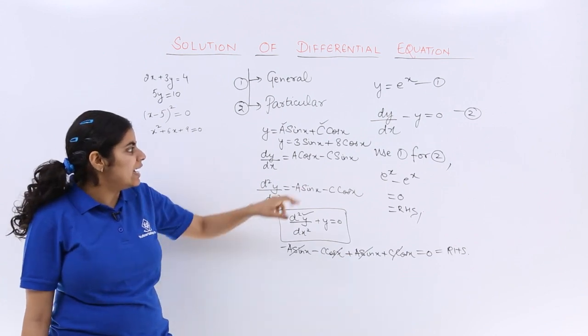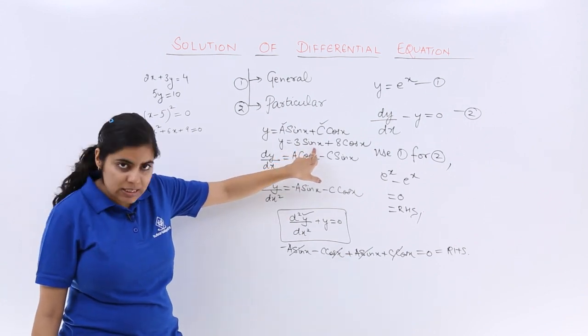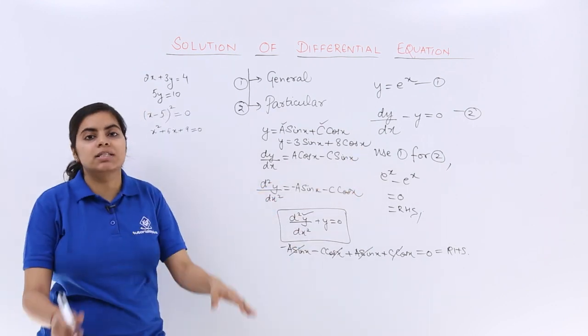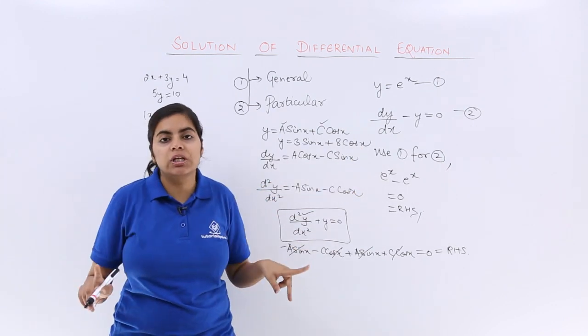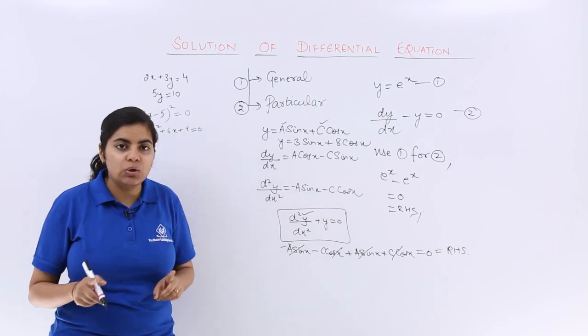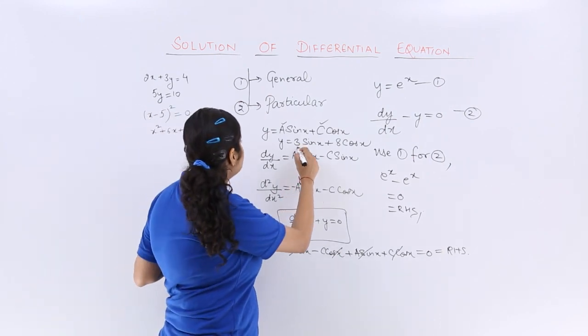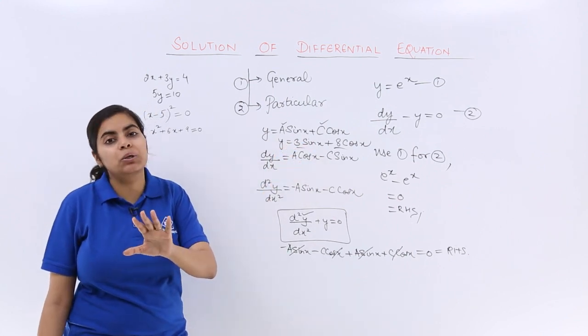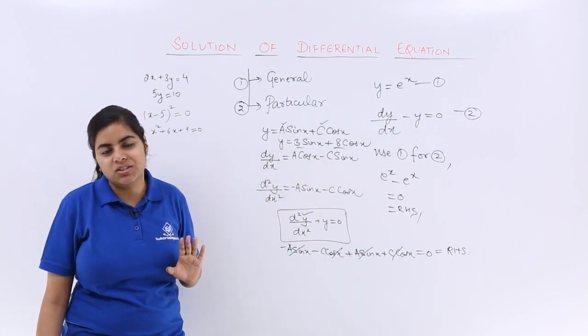That means y equals 3 sin x plus 8 cos x is the particular solution, not the general one. Why? Because the particular solution has a particular value assigned to the constants.